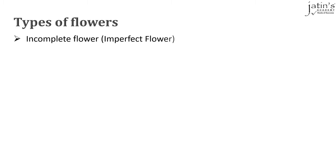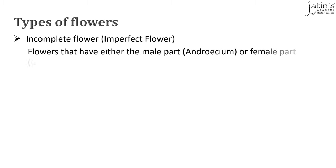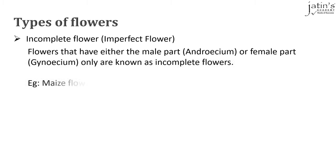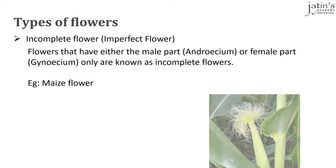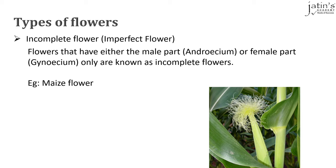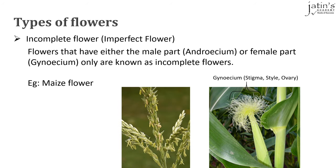On the other hand, incomplete or imperfect flowers have either just the male part, the androecium, or the female part, the gynoecium. For example, a maize flower. Here we can see a typical maize flower that contains just the gynoecium — the stigma, style and ovary — while the androecium is on a separate flower.